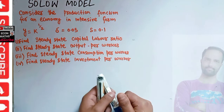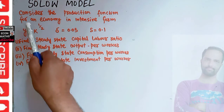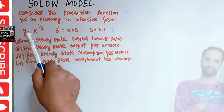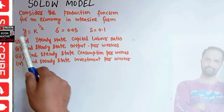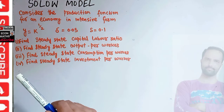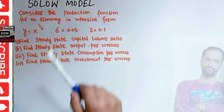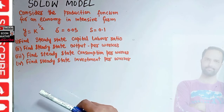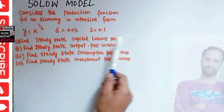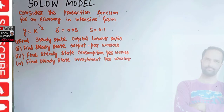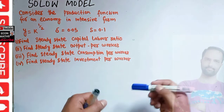Let us solve a numerical problem on the Solow model. The question is: consider the production function for an economy in intensive form — y is equal to k to the power one upon two, where y is the output per worker and k is the capital per worker or capital-labor ratio. Depreciation rate is five percent, savings rate is ten percent. We have to find the steady state capital-labor ratio, steady state output per worker, steady state consumption per worker, and steady state investment per worker.